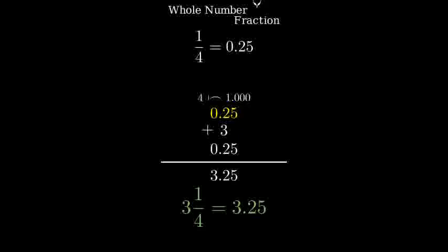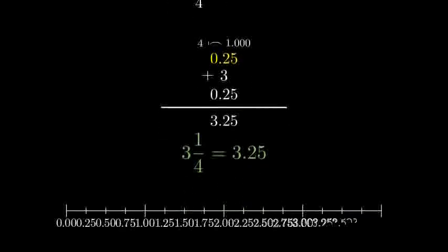Let's visualize this with number lines. Here's our mixed number on a number line. The whole number 3 gets us here, and then we add another quarter, or 0.25 to get to 3.25.